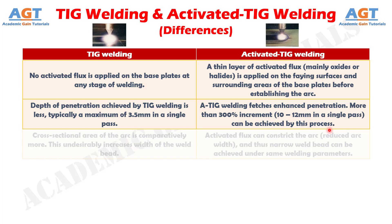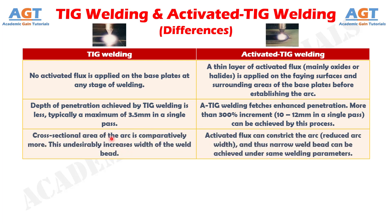Number 3: in TIG welding, the cross-sectional area of the arc is comparatively more. This undesirably increases the width of the weld bead, whereas in activated TIG welding, activated flux can constrict the arc to a reduced arc width, and thus a narrow weld bead can be achieved under the same welding parameters.